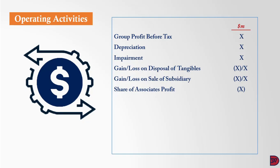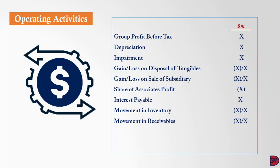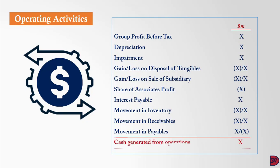Then we adjust for interest payable and movement in working capital. For inventory, if it is an increase we subtract; if it is a decrease we add. The same applies for receivables: subtract an increase, add a decrease. For payables, on the other hand, we add an increase and subtract a decrease. This will lead to cash generated from operations.